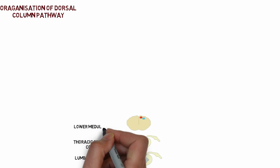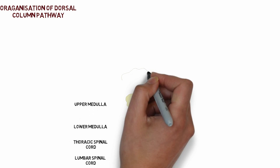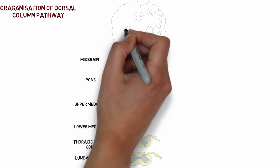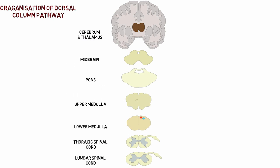Let's look at the organization of the dorsal column pathway. What you see right here are the multiple cross sections of spinal cord at various levels from the lumbar spinal cord up till the midbrain. And finally we have a section showing the cerebrum and the thalamus.